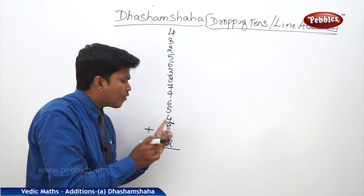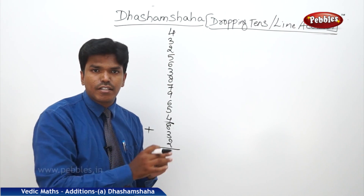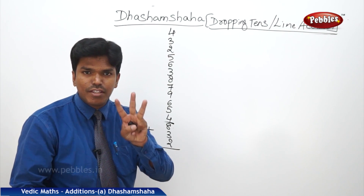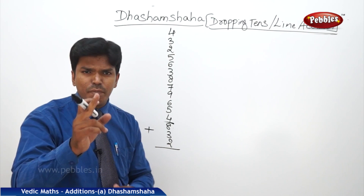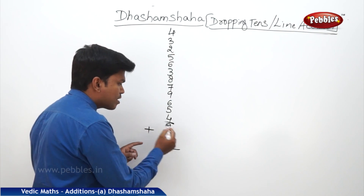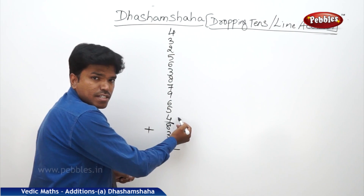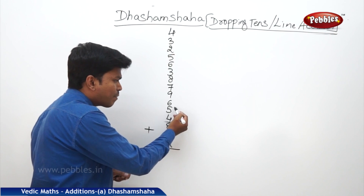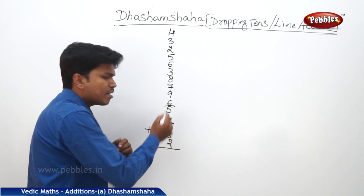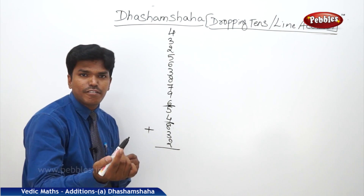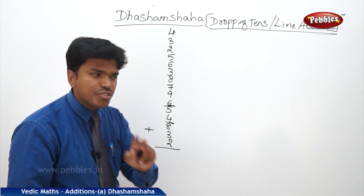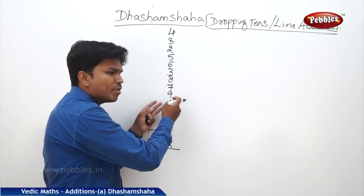Out of 13, I have dropped a 10. The remaining is 3. So immediately carry the 3 to the next number. What is 3 plus 4? 7. 7 plus 5? 12. Again more than 10, so drop a 10. Remaining is 2. Immediately carry this 2 to the next number.